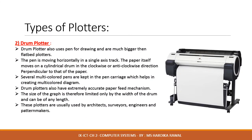The drum plotter also uses pens for drawing and is much bigger than the flat bed plotter. The pen is moved horizontally in a single axis track, while the paper itself moves on a cylindrical drum in the clockwise or anti-clockwise direction perpendicular to the pen. Several multicolored pens are kept in a pen carriage, which helps in creating multicolored diagrams. Drum plotters also have extremely accurate paper feed mechanisms. The size of the graph is limited only by the width of the drum and can be of any length, so these plotters are usually used by architects, surveyors, engineers, and pattern makers.